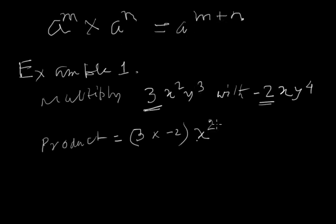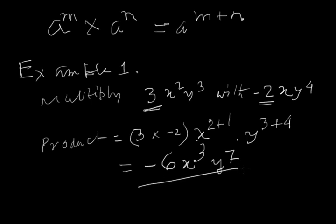So 2 and 1. Now see y. Here the degree is 3 and here the degree is 4. So it should be added. So finally, you are getting 3 into minus 2. So plus minus, it becomes minus 3 times 2 is 6, x raised to the power 3 and y raised to the power 7. So this is our answer.